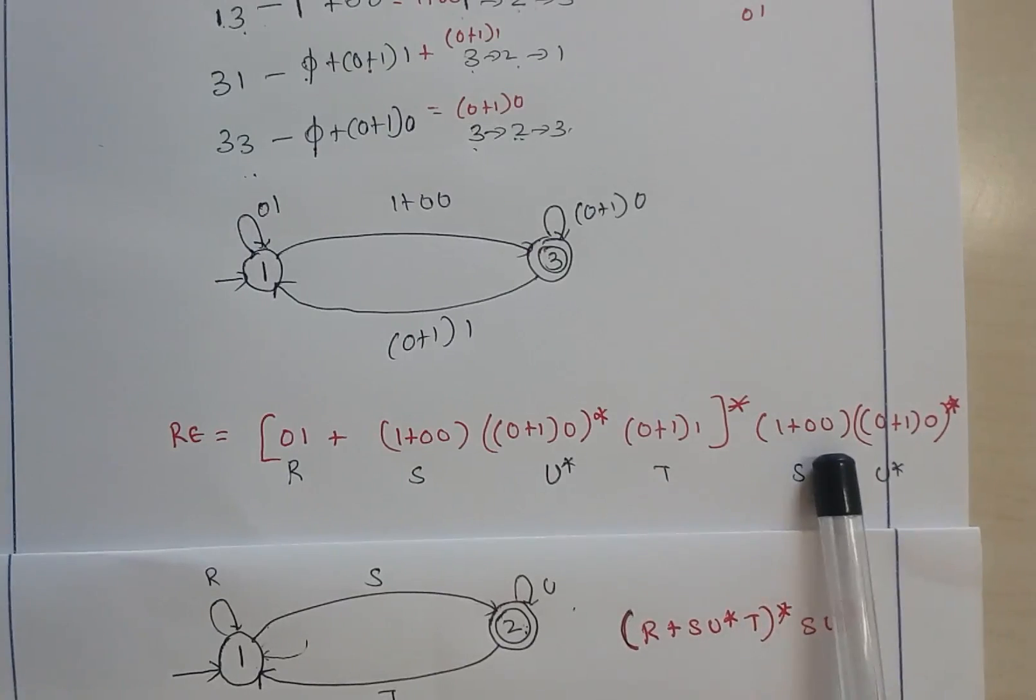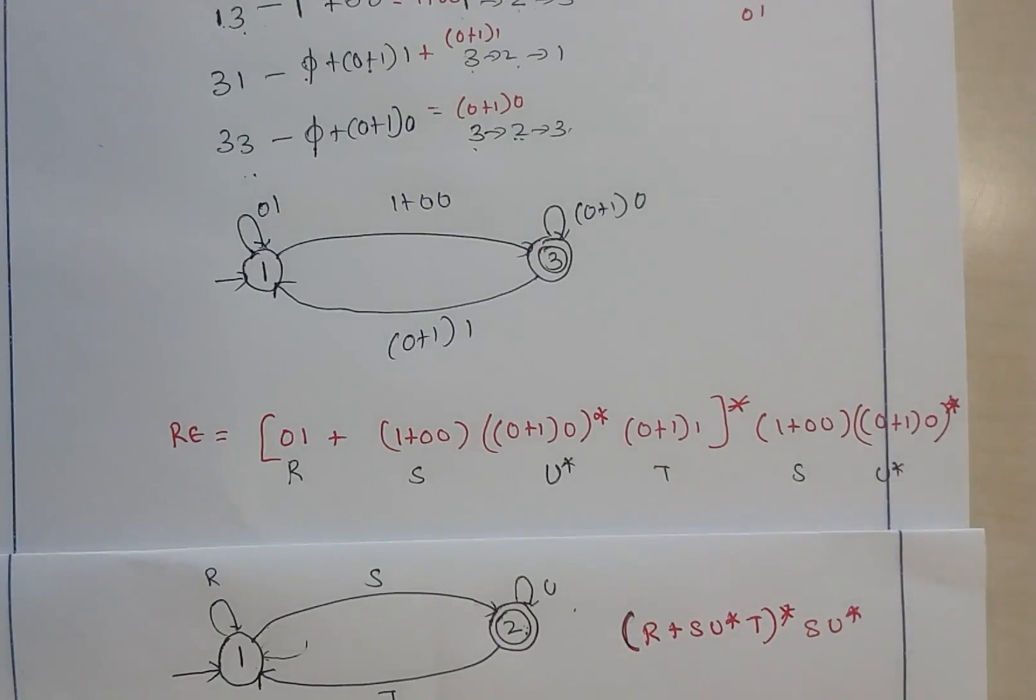So this whole star followed by s u star. S is 1+00 followed by this. So whenever you have a looping condition, we have to follow these possible states. Thank you.